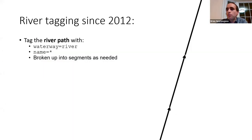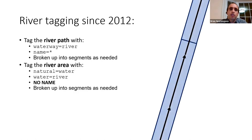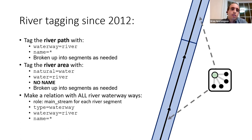Here is the current scheme used today: tag the river path with waterway=river and name, broken into pieces as needed; tag the river area with natural=water and water=river, without a name, broken into segments as needed; and if it's a long river, create a waterway relation to group all the pieces together.